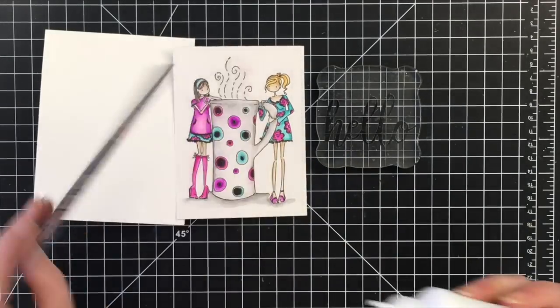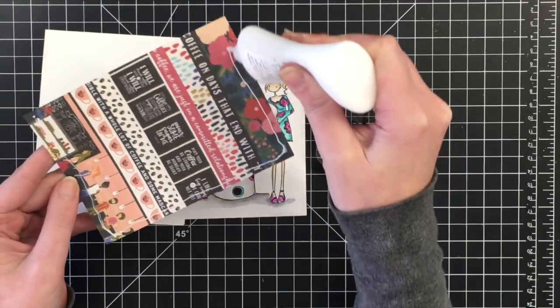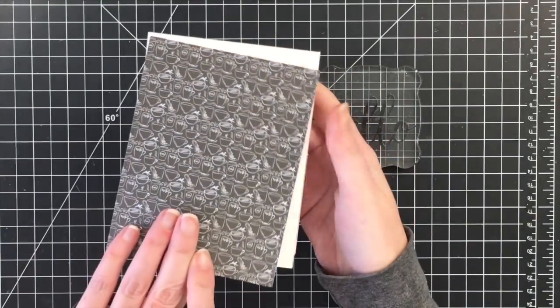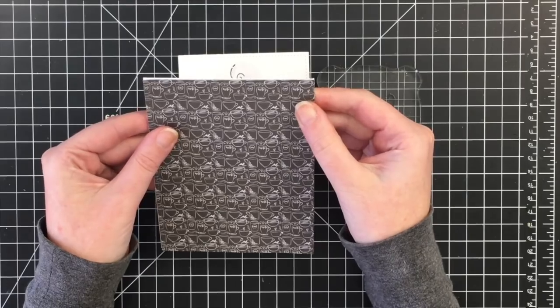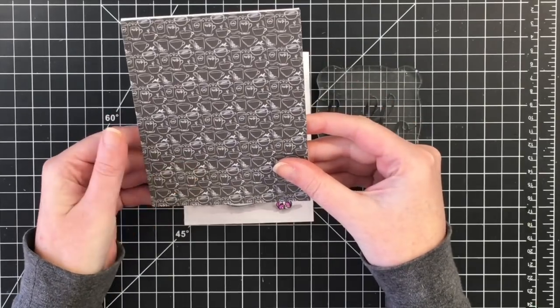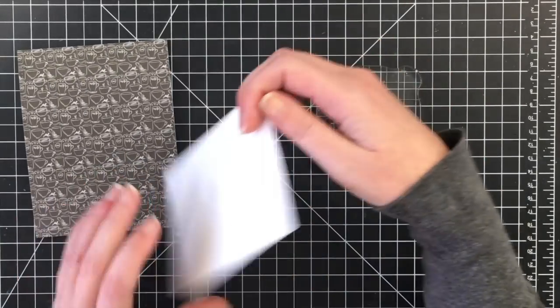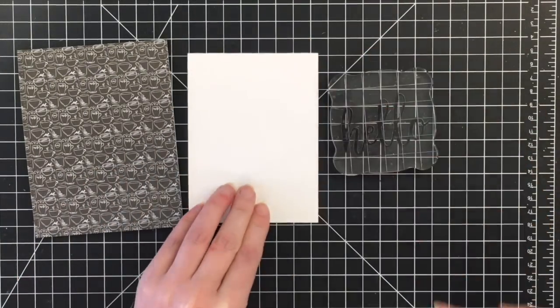And then I'm going to add on the back panel to my card base. I really love this black and white piece of patterned paper. I did cut that out with a stitched rectangle die. Same with the panel with my water-colored image on it.